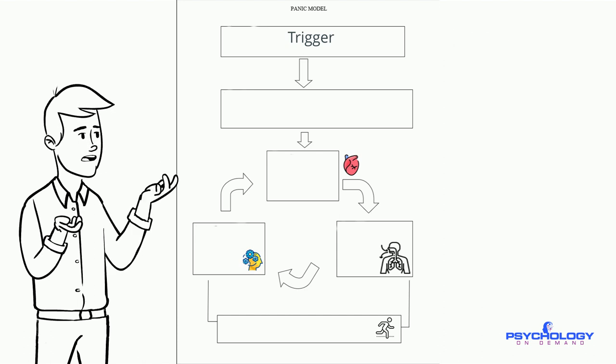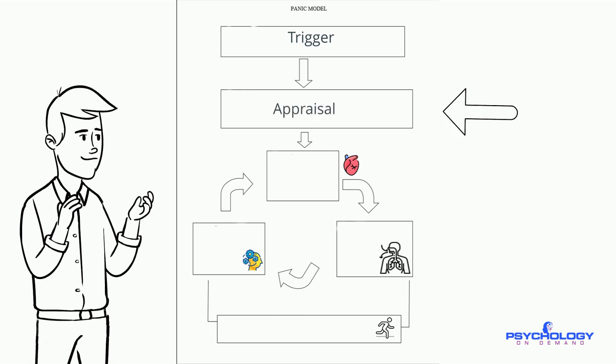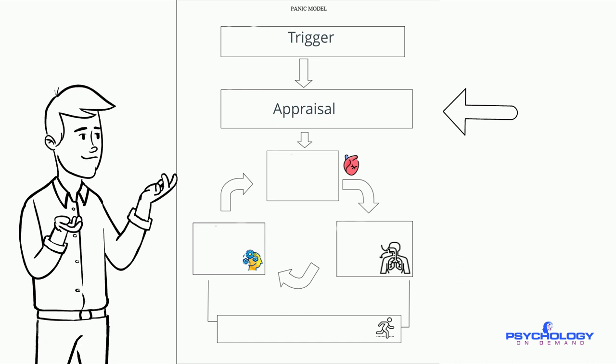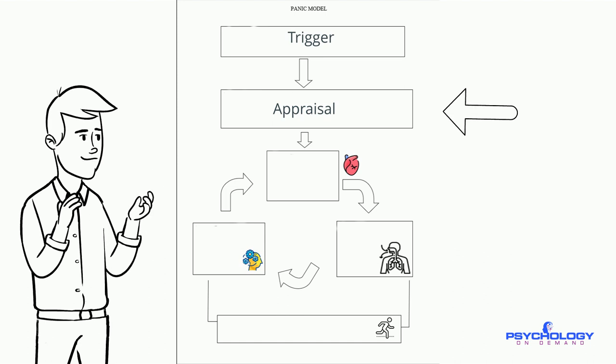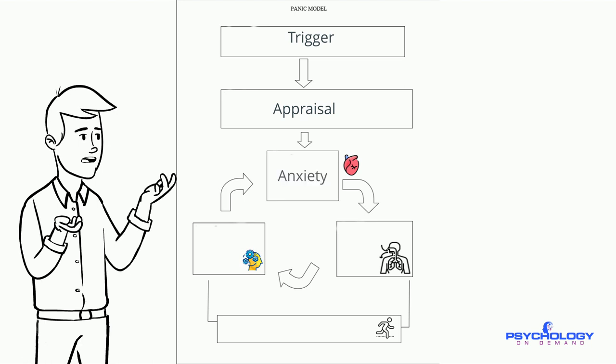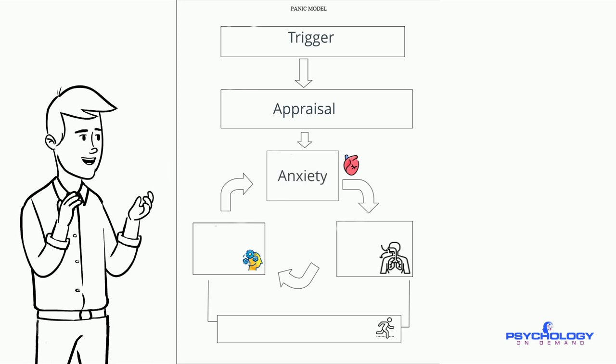The person then has an appraisal such as something bad is going to happen to my body, or this is too much, I won't be able to pay my bills. This then starts the autonomic nervous system and creates anxiety.